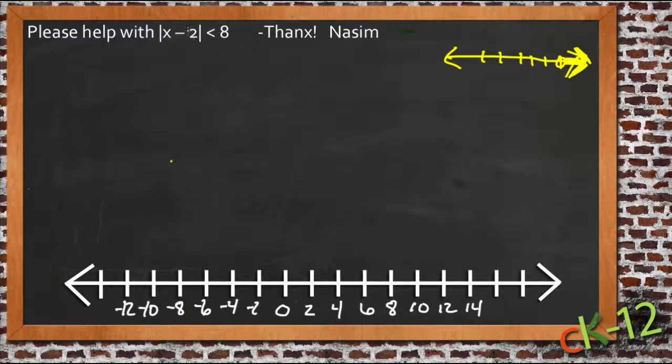And whereas with absolute values, we'd have two different possibilities. Maybe we'd have one number graphed at a negative value, and one number graphed at a positive value.